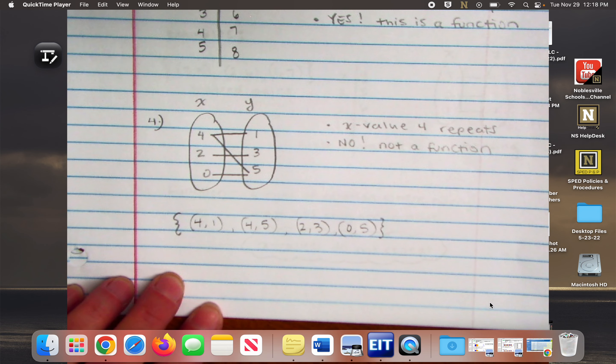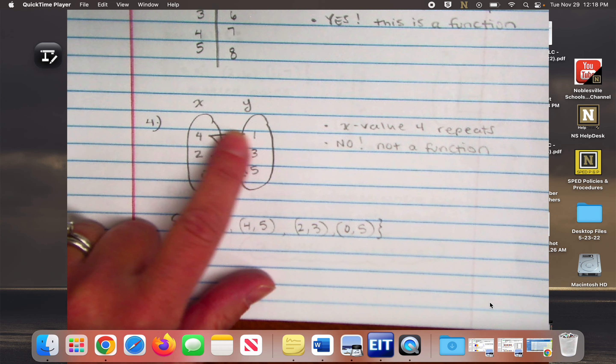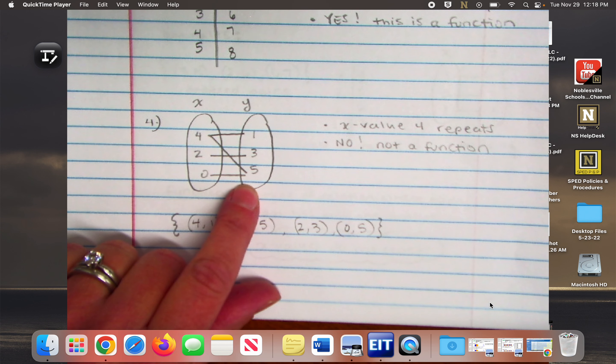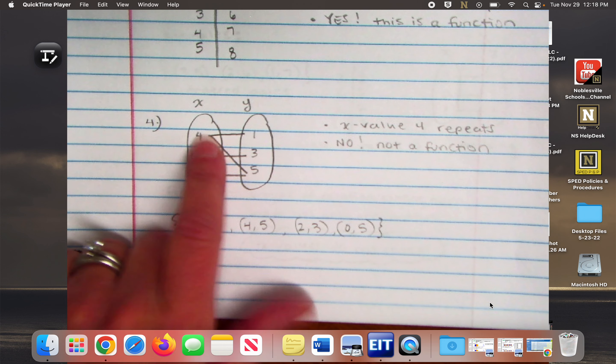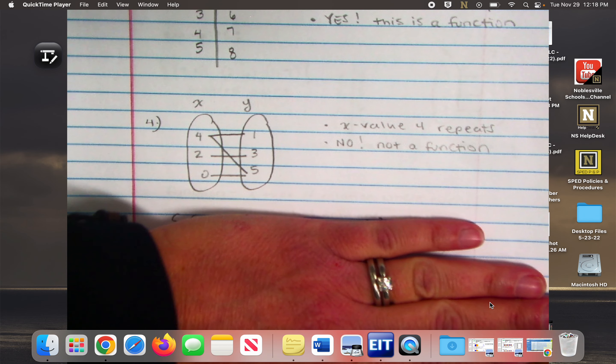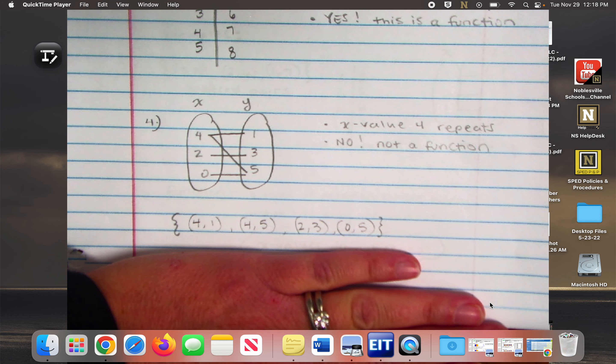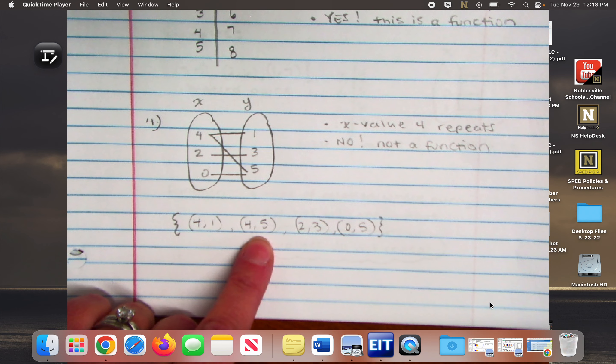So another way you might have been able to see that before writing out the ordered pairs is you see how there are two lines coming from the 4? So that tells you that X value is used more than once, so it's not going to be a function, right? So some of us can just look at the mapping and go, oh hey, that 4 is used twice. It's not going to be a function. Some of us need to write out the ordered pairs to say, oh, the 4 is used more than once, okay?